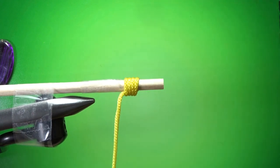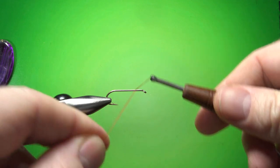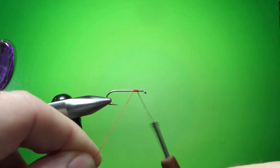Now let me show you how easy this is to do with real thread on a hook. Okay, so here we are with the hook. I'm using some 210 red thread. You should be able to see it a little bit better. And this is a size six hook. I'll just get it caught in right here.